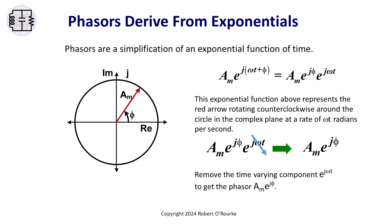Phasors come from exponential functions. This time-domain exponential function represents the red arrow in the drawing on the left, rotating counterclockwise around in a circle. The red arrow rotates at a constant rate of omega-t radians per second. The red arrow by itself is the phasor, described by the equation a sub m e to the j phi.